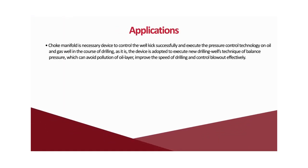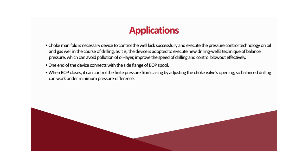Applications. The choke manifold is a necessary device to control well kicks successfully and execute pressure control technology on oil and gas wells during drilling. The device is adopted to execute new drilling techniques of balance pressure drilling, which can avoid pollution of the oil layer, improve the speed of drilling, and control blowout effectively. One end of the device connects with the side flange of the BOP spool; when the BOP closes, it can control finite pressure from the casing by adjusting the choke valve opening.